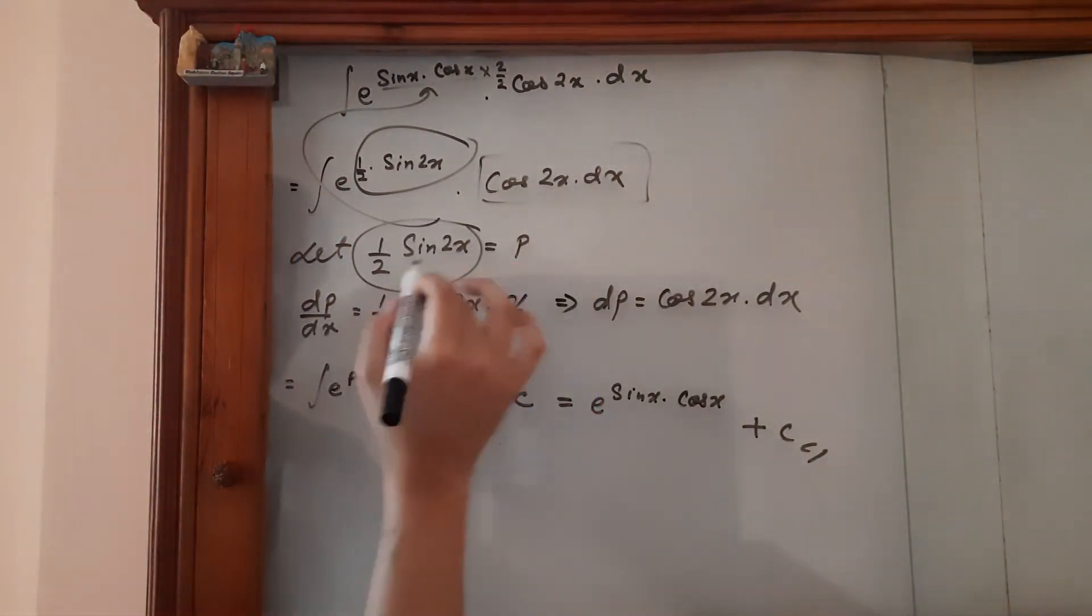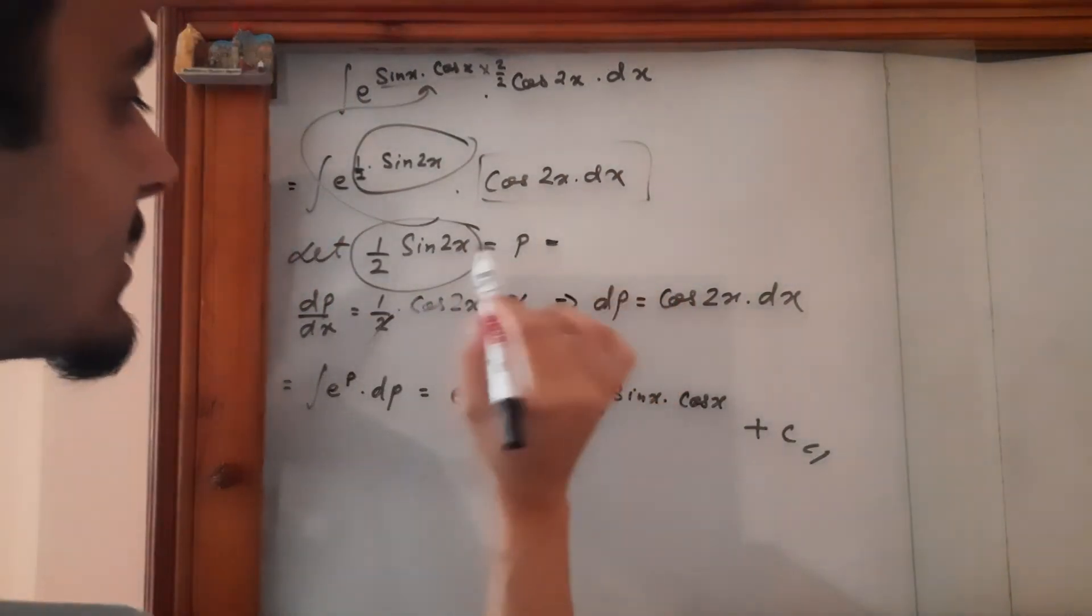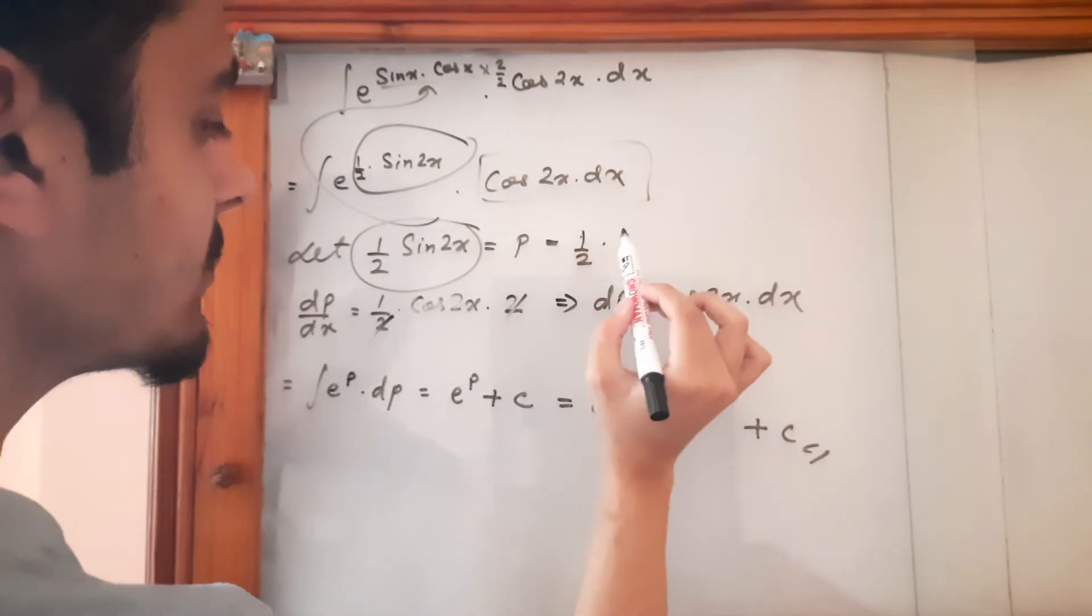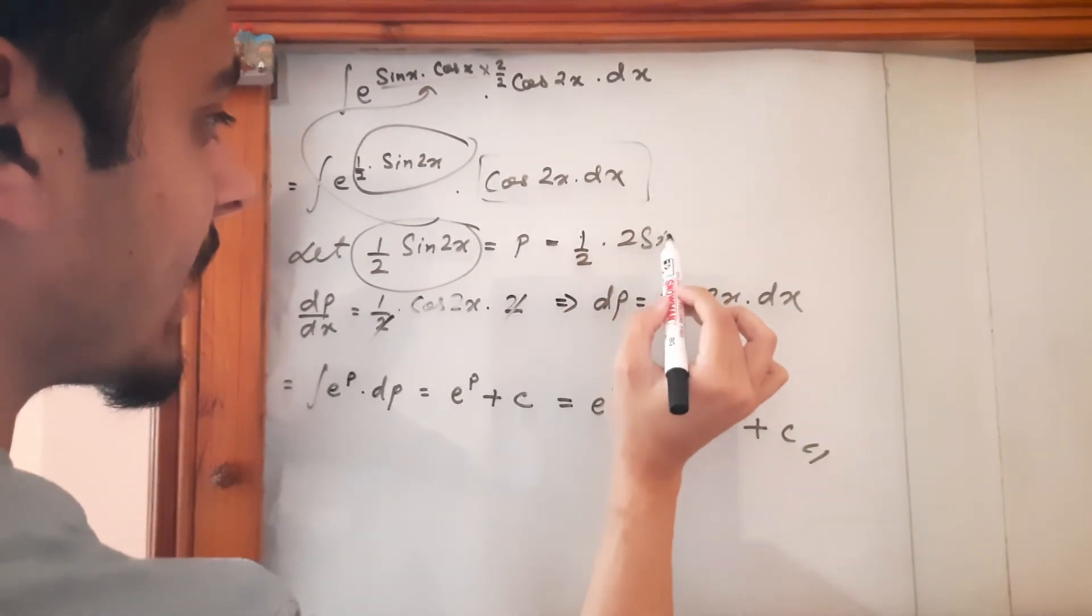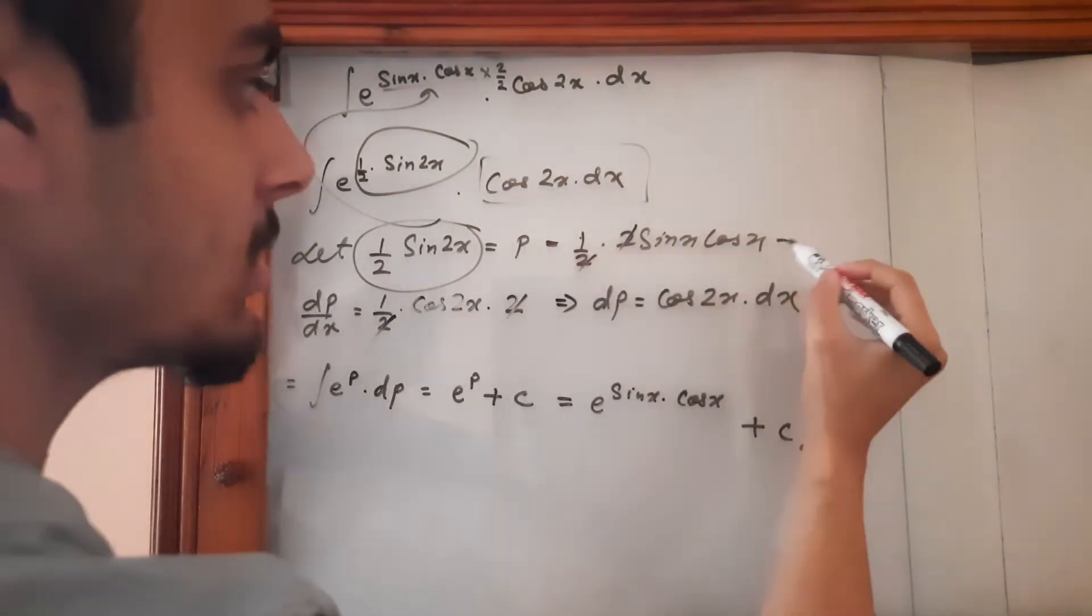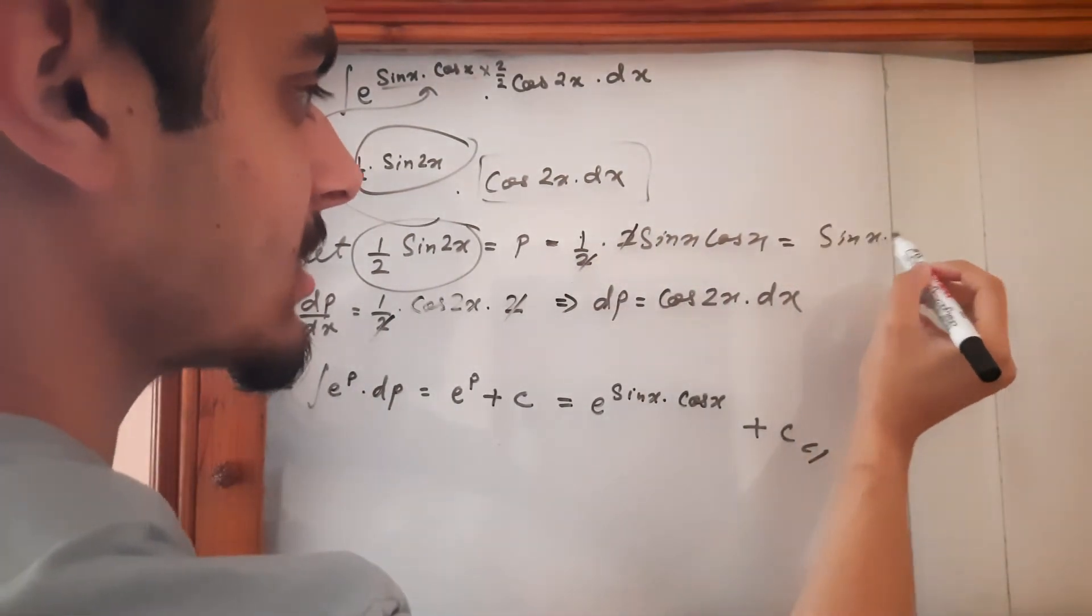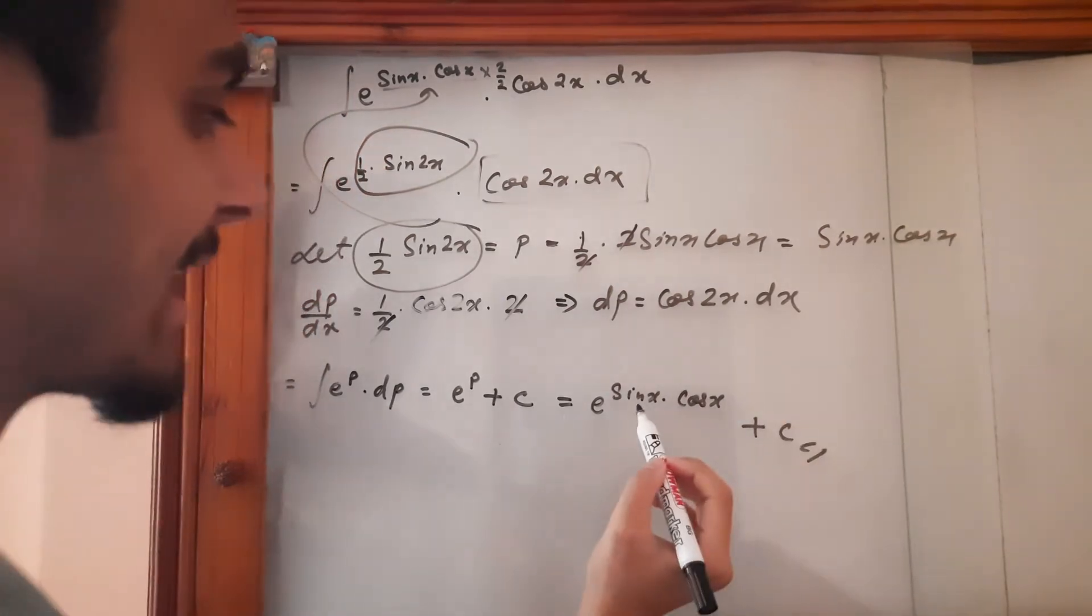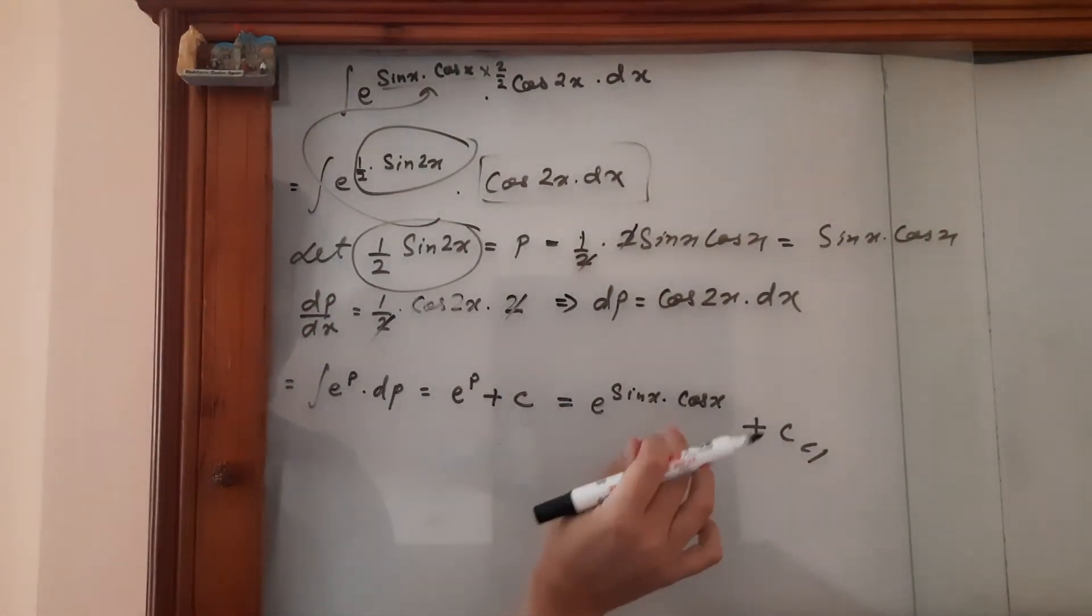So p is this, or we can write p as 1 upon 2 times 2 sine x cos x. I'm just showing how this came. So 2 cancels 2 is equal to sine x times cos x and that's exactly what we have replaced the value of p over here.